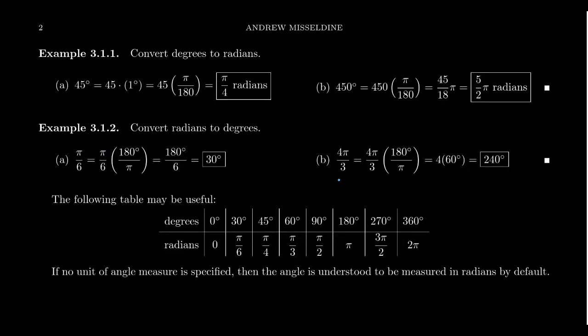Likewise, if we take 4π thirds, if you multiply by 180 degrees over π, then the π should cancel out. You get 4 times 180 over 3. 3 goes into 180 60 times. So you get 4 times 60, which is 240 degrees.